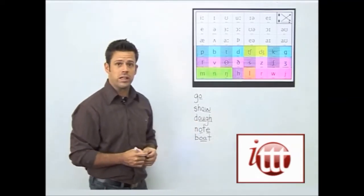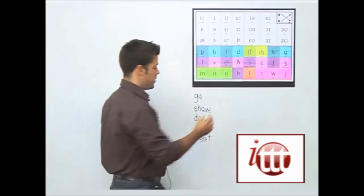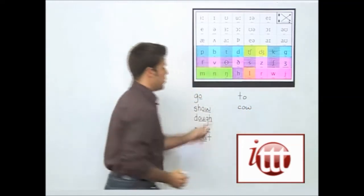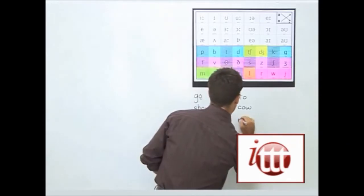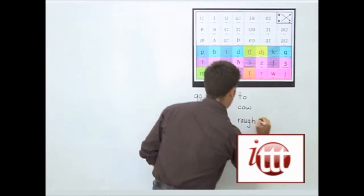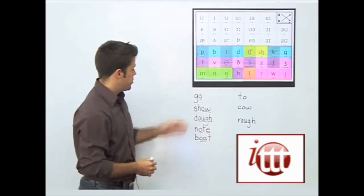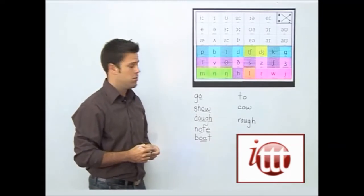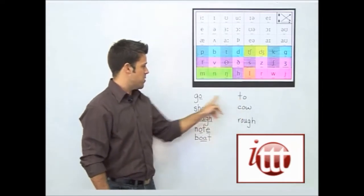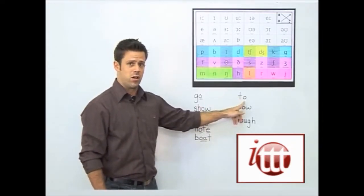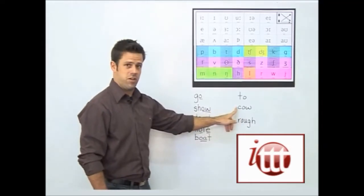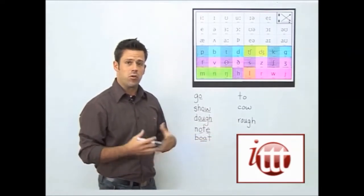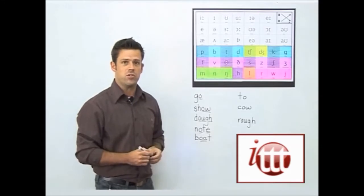Now that's okay until we get to a situation where we also have words like cow and rough. The student has gone from knowing that these letters put together in these patterns will produce an O sound, and now they're confused by the fact that the same pattern can produce a different vowel sound here, a different vowel sound here, and a different vowel sound here. Put this all together and we've created a situation which can become very confusing to our non-native learner.